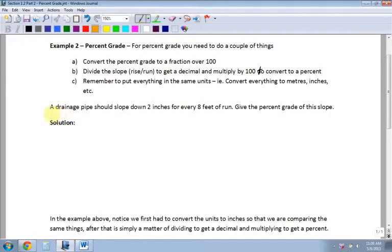Like example one, a drainage pipe should slope down two inches for every eight feet of the run. Okay, well this we need to convert to inches. So how many inches are in a foot? Well one foot is actually equal to 12 inches, so that means to convert eight feet to inches I need to take eight times it by 12, so I get 96 inches.